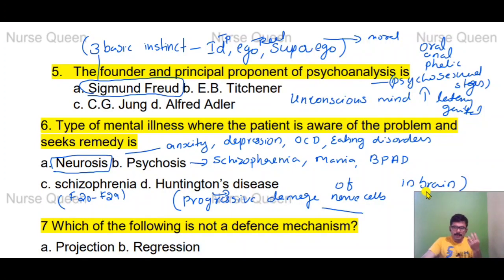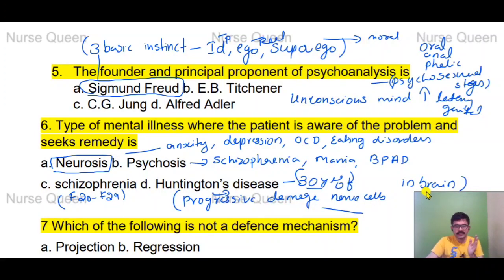In Huntington's Disease, with medicines, a patient can live for 10 to 30 years.